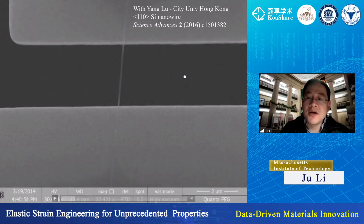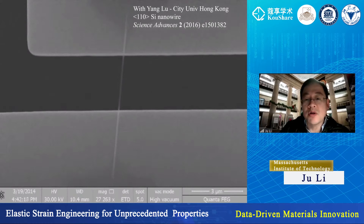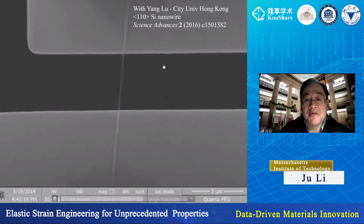What I want to talk about is what so-called deep elastic strain can give you. In an experiment in collaboration with Professor Yang Lu at City University of Hong Kong, they grew 1-1-0 silicon nanowires — actually pretty big, micron-scale nanowires. In a MEMS device, you can strain this silicon wire by more than 10%, and it's completely reversible and elastic until it fractures at about 14%. Before fracture, the deformation is completely reversible.